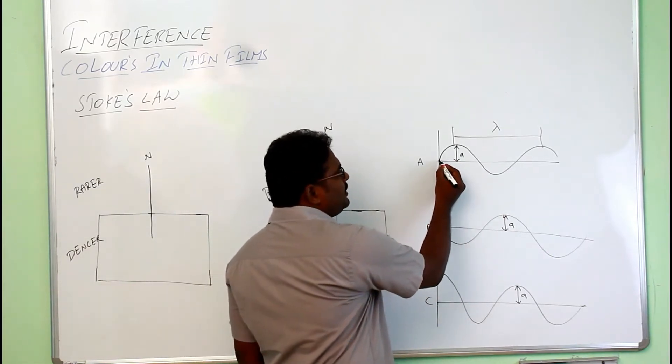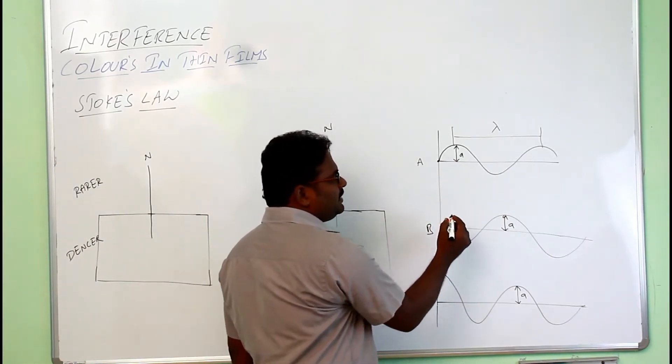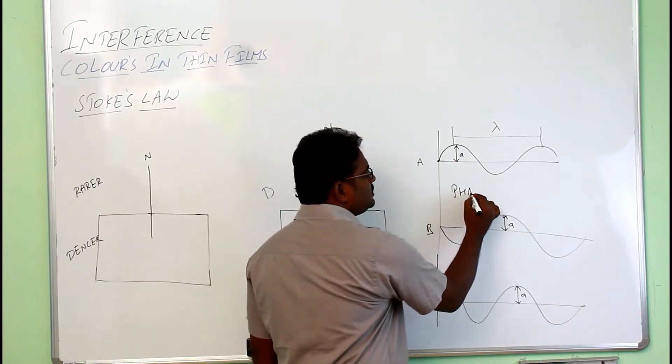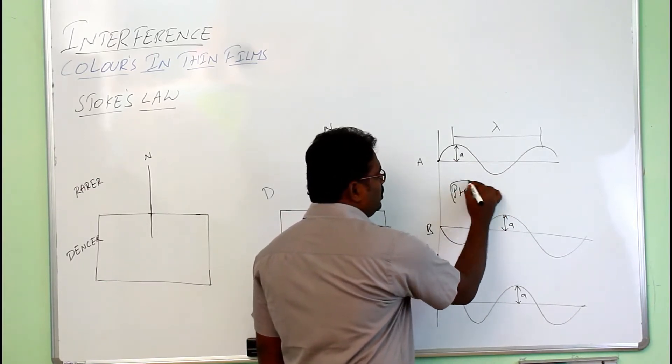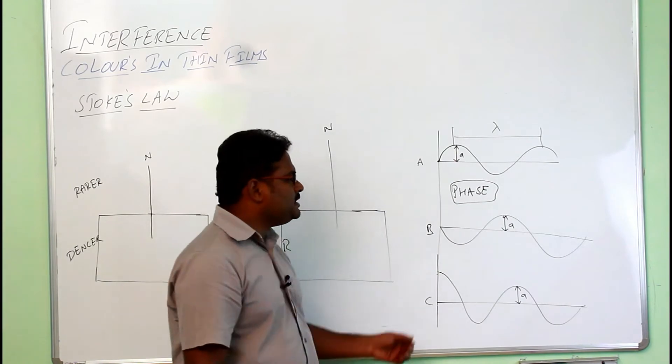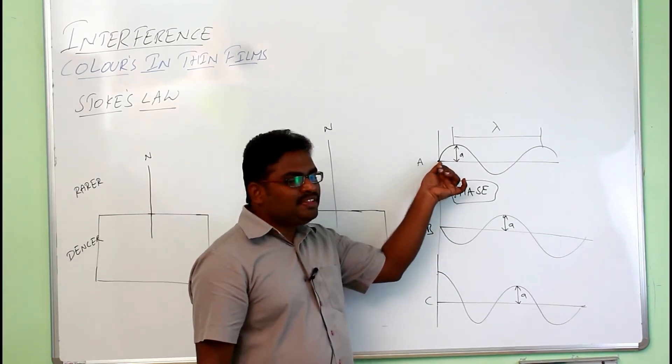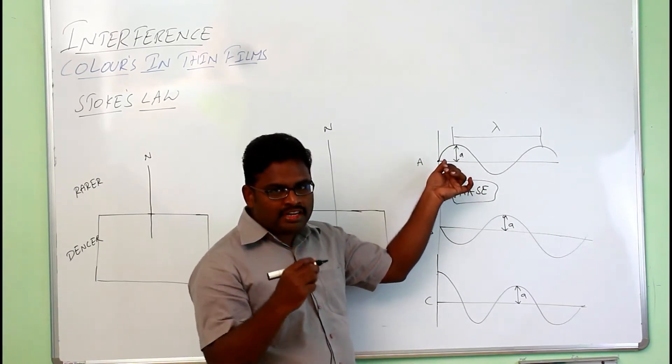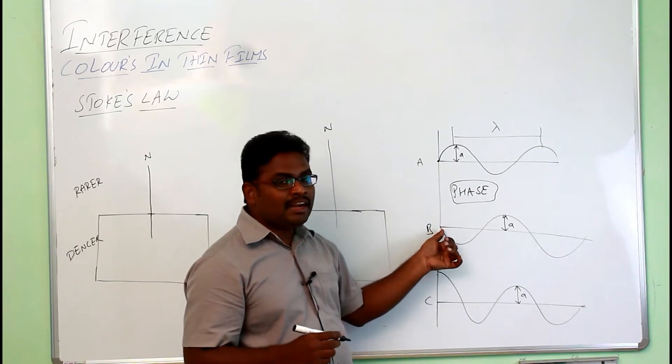Since it is starting with the, there is only one difference called phase difference. All the three waves are having a phase difference. Consider this wave, this is starting from an angle of 0 degrees and this is starting with the 180 degrees.